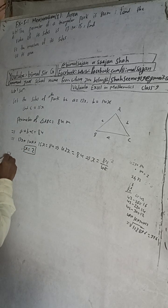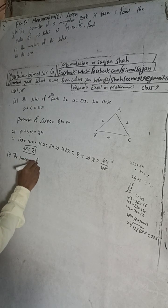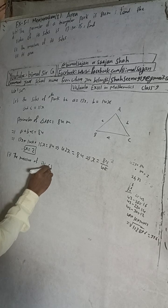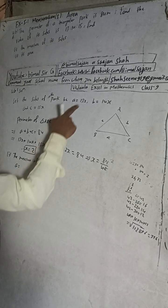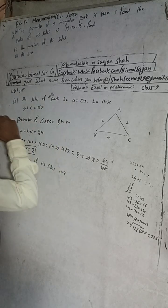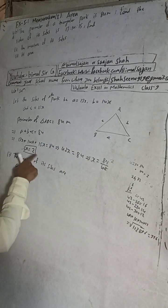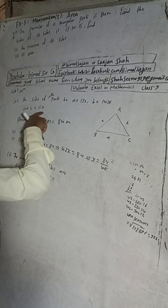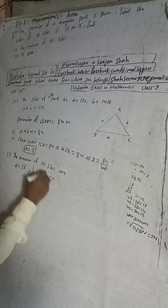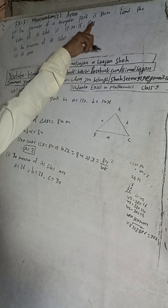Number one: the measure of the sides. Therefore the sides are: a = 13x = 13 × 2 = 26 meters, b = 14x = 14 × 2 = 28 meters, and c = 15x = 15 × 2 = 30 meters. These are in meters because the perimeter was given in meters.